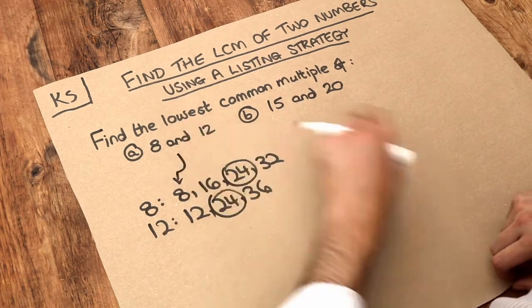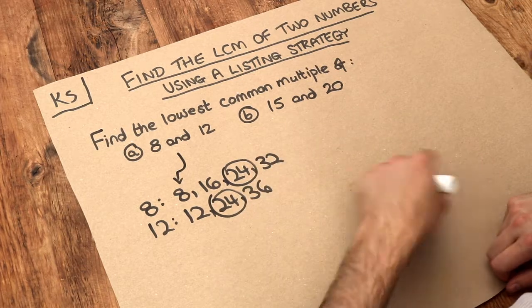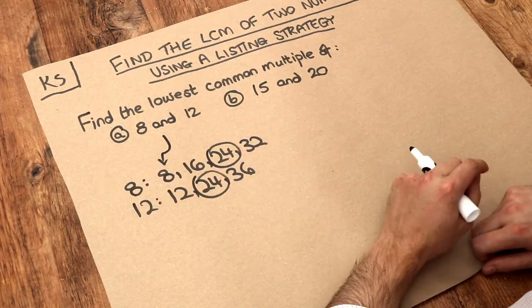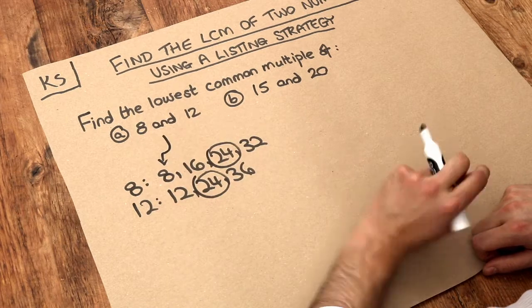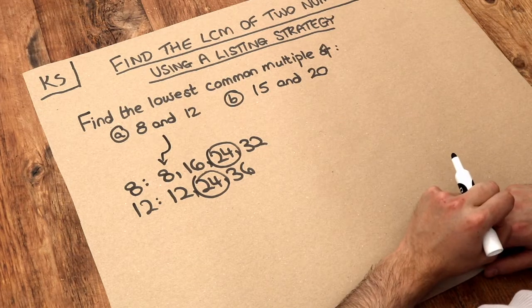Now the word lowest just means we try to find the lowest common multiple that we can find. Because 24 isn't the only common multiple of 8 and 12. 48, for example, is a multiple of 8 and a multiple of 12. But it's not the lowest one we can find.